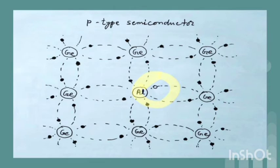At room temperature in P-type semiconductor, when some electrons shift to conduction band leaving behind the same number of holes in valence band, the overall number of holes in valence band is more than the number of electrons in conduction band due to deficiency of electrons caused by impurity atoms. Hence, in P-type semiconductor, holes are the majority carriers and electrons are the minority carriers.